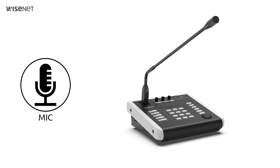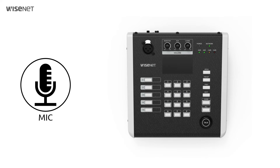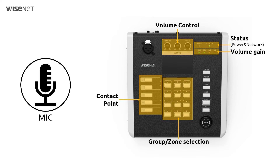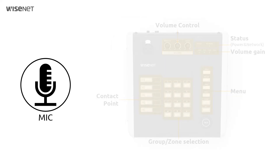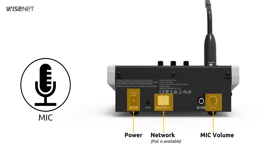IP Remote Microphone helps to announce messages in real-time, or to operate the system with buttons as programmed. On the front, there are a microphone unit and volume controls, Power LED, Volume Gain LED, contact point buttons for event and preset, and group and zone selection buttons. On the back, there are a network port and power in port. But if it is powered by PoE, then it does not need additional power in. And there is a microphone volume control.